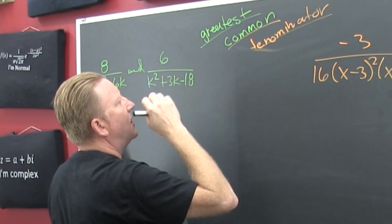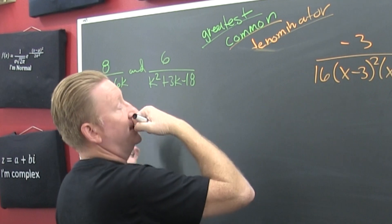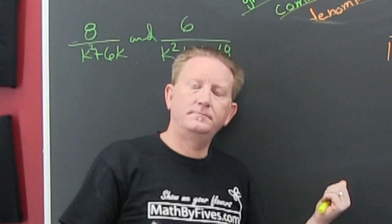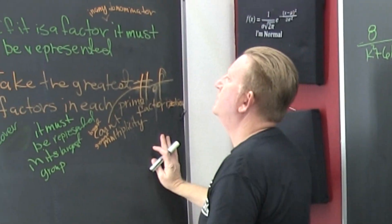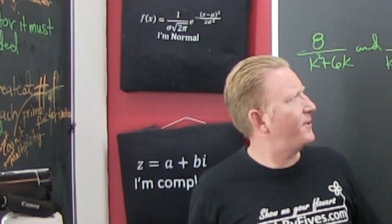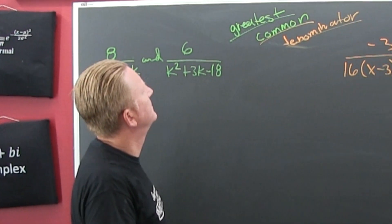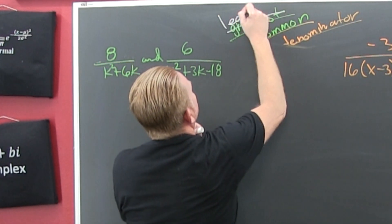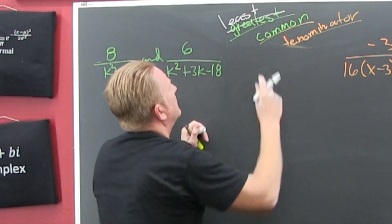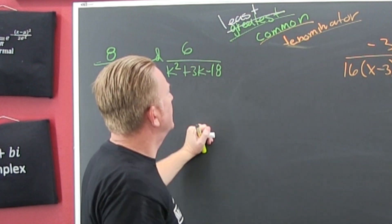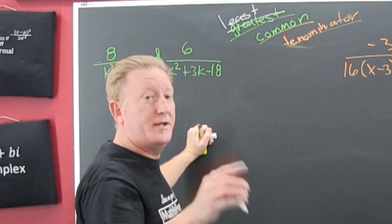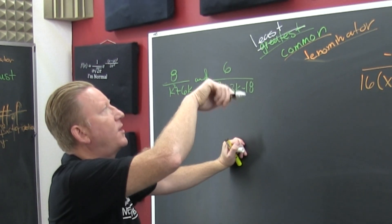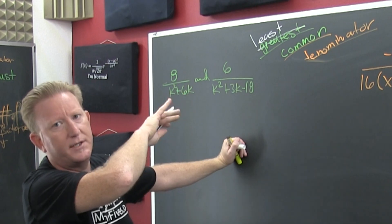We're looking for the greatest common denominator. No, not the greatest — that should be the least. The least common denominator. If that was in your notes from the previous example, go ahead and cross that out and put least.